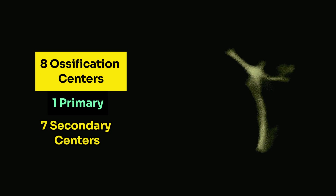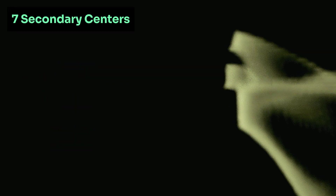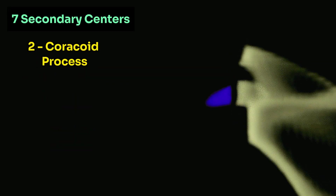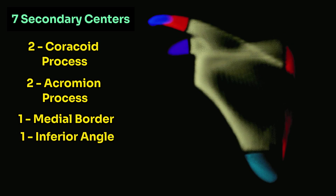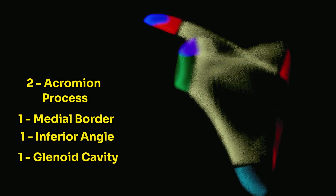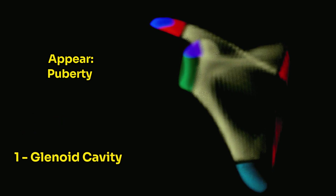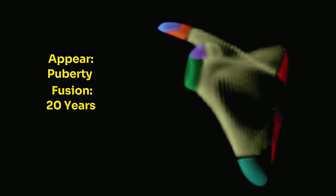Coming to ossification, the scapula ossifies through 8 centers, of which 1 is a primary center and 7 are secondary centers. The first primary center occurs at the age of 8 weeks of intrauterine life. The first center for the coracoid process occurs at the age of 1 year and fuses with the primary center at the age of 15 years. Of the 7 secondary centers, 2 are for the coracoid process, 2 are for the acromion process, 1 for the medial border, 1 for the inferior angle, and 1 for the glenoid cavity. All these centers appear at the age of puberty and fuse with the primary center at the age of 20 years.